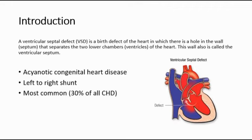This ventricular septal defect is an acyanotic congenital heart disease, which means that the child will not present with cyanosis, so no bluish discoloration of the skin. The blood flows from the left ventricle to the right ventricle because the ventricular pressure in the left ventricle is higher, as it is needed to pump blood to the whole body — so there is a left-to-right shunt of the blood. This ventricular septal defect is the most common among all congenital heart diseases, consisting of 30% of all congenital heart diseases.